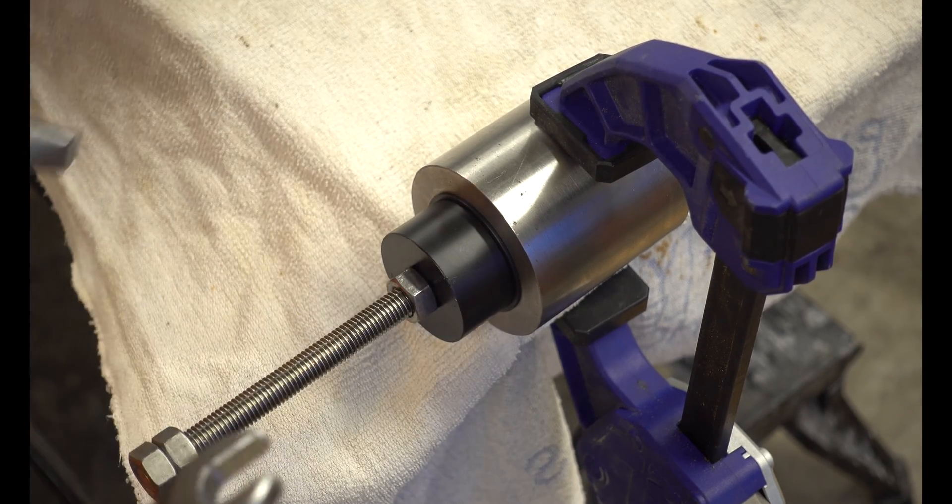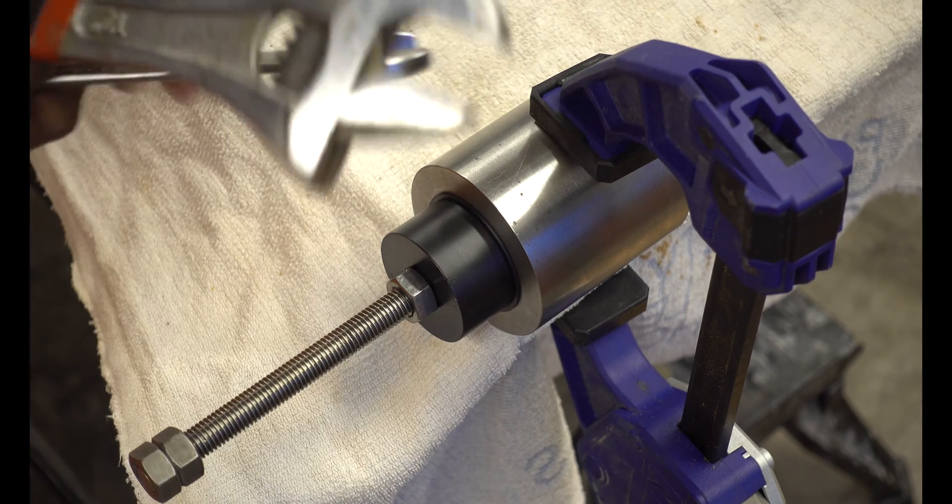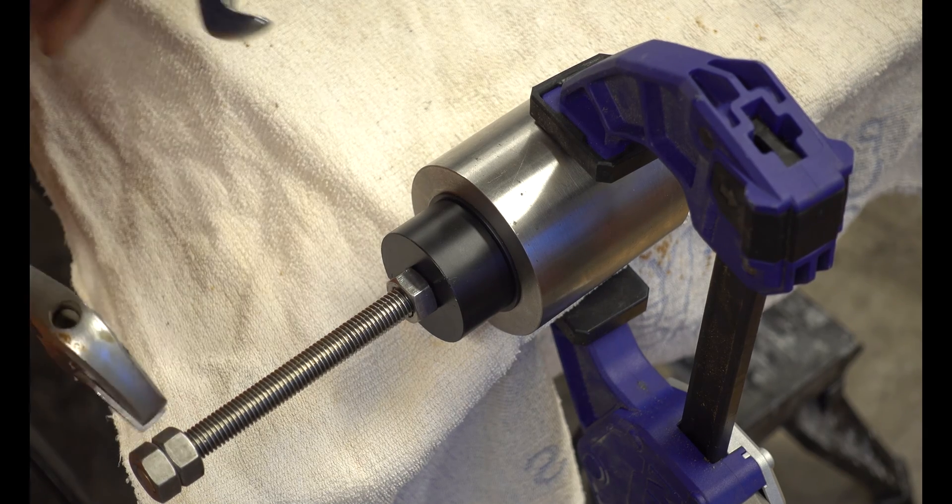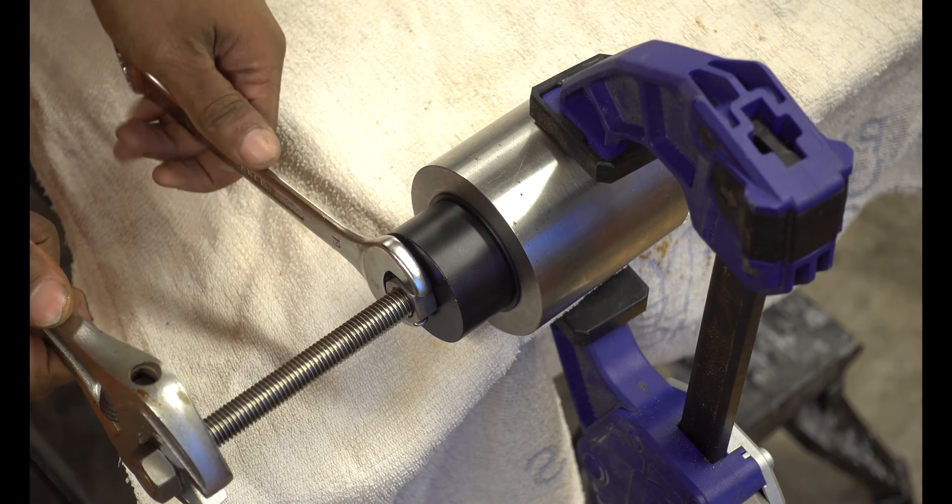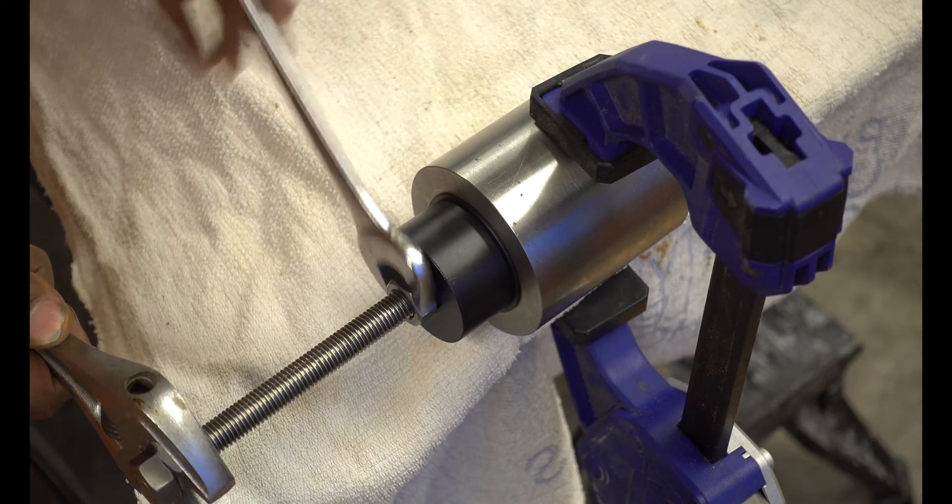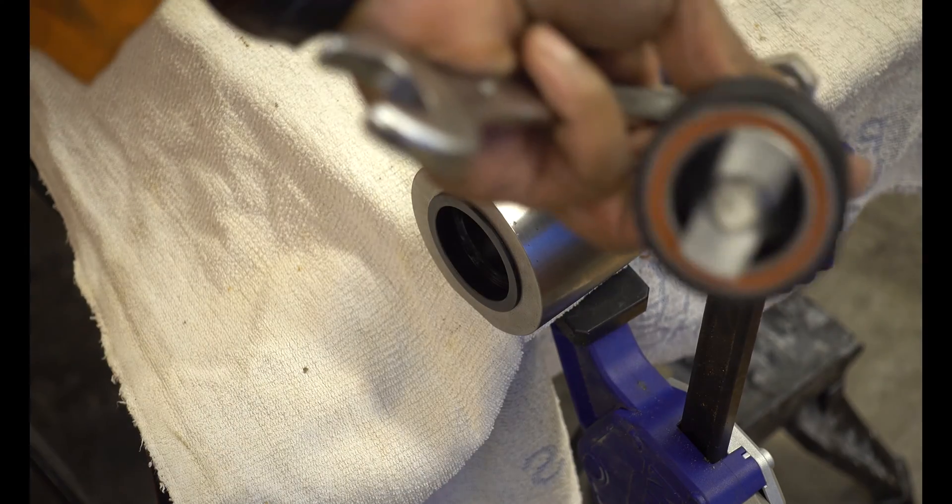If your bearing is seized, the method is slightly different. That way we will hold this nut still and tighten this nut clockwise. And the bearing comes out.